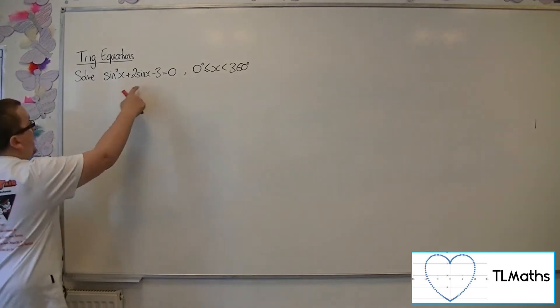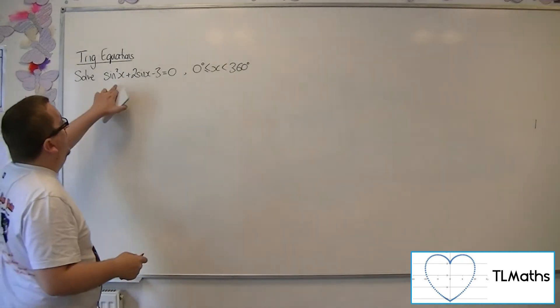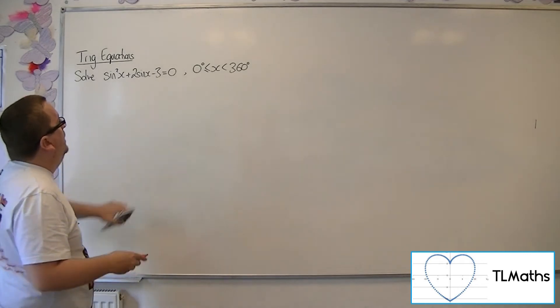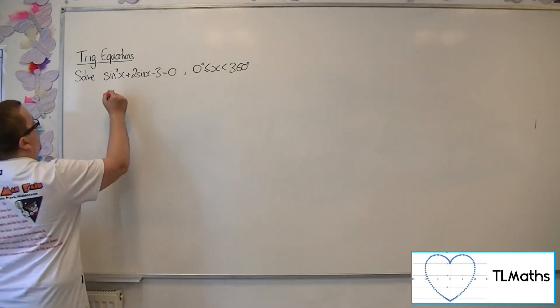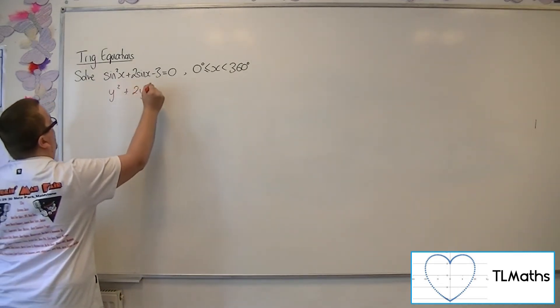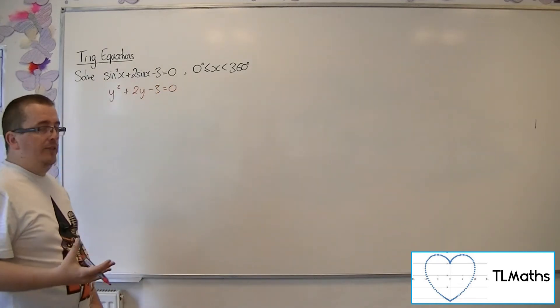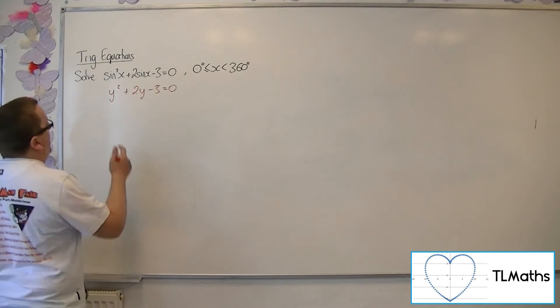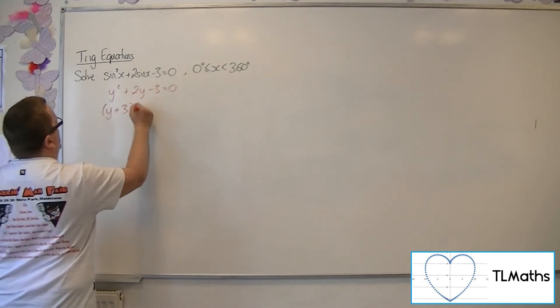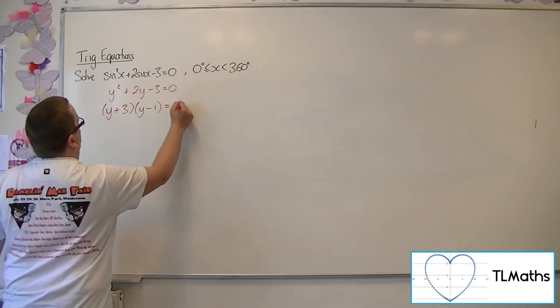Now, it's sometimes easier to see factorizing this if you think of it like y squared plus 2y minus 3 equals 0. So factorizing that quadratic instead, which you should be able to do as y plus 3, y minus 1.